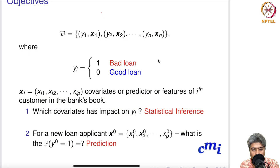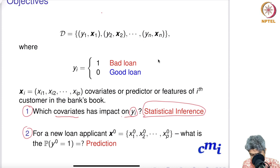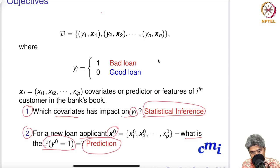Given this setup, there are two kinds of questions you will be looking for. The first question is: which covariate has an impact on yi — that is, which covariate affects whether a loan is good or bad? This kind of question falls in the category of statistical inference. The second kind of question is: for a new loan applicant given x0, what is the probability that y0 equals one — meaning it will be a bad loan? This is a prediction problem.